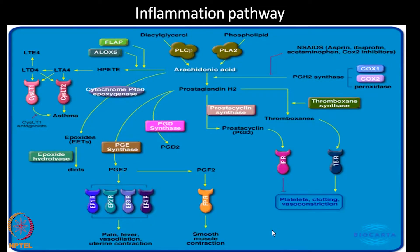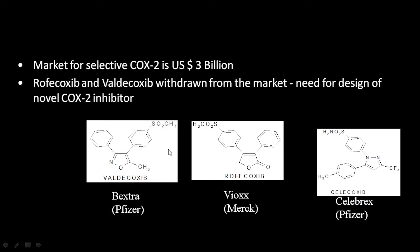Let us go to the inflammatory pathway. We have arachidonic acid produced which gets converted to prostaglandin H2 by the COX-2 enzymes, and the arachidonic acid also gets converted to the leukotrienes by the lipoxygenase enzymes. There are drugs which are very specific towards COX-2 which are in the market, like celecoxib, rofecoxib, and valdecoxib.